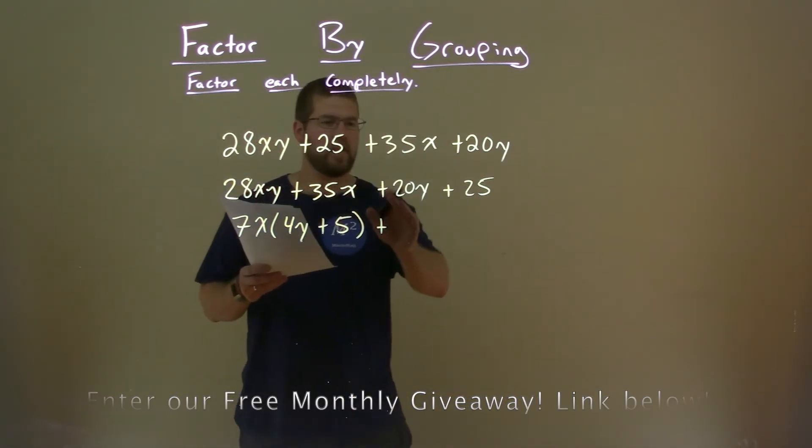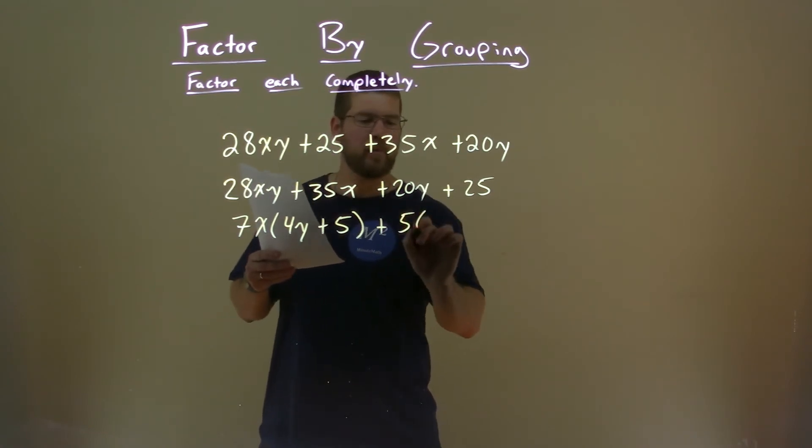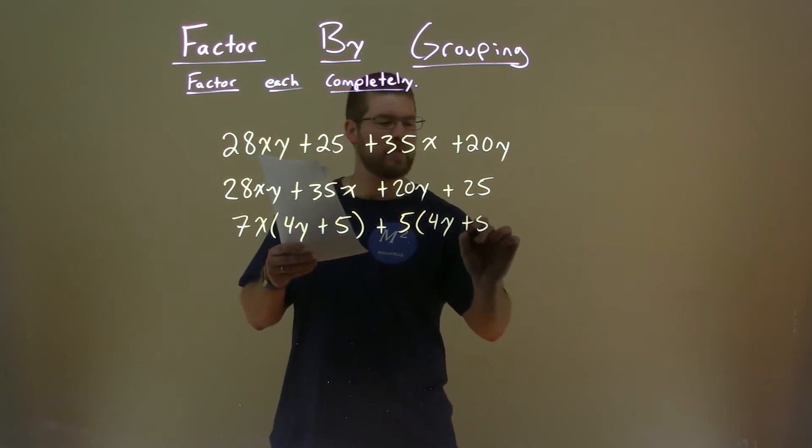We're going to do something similar with the next two numbers. 20y and 25 both have a 5 in them. We pull out a 5, and we're left with a 4y plus a 5 here.